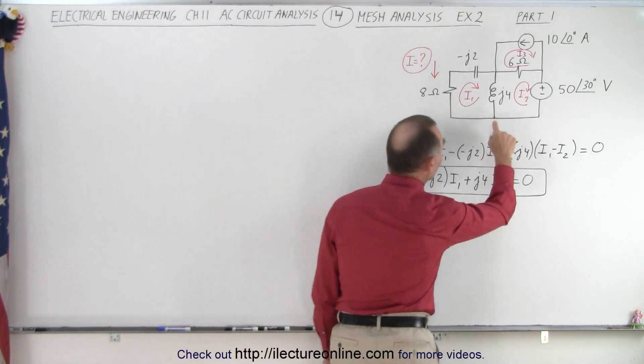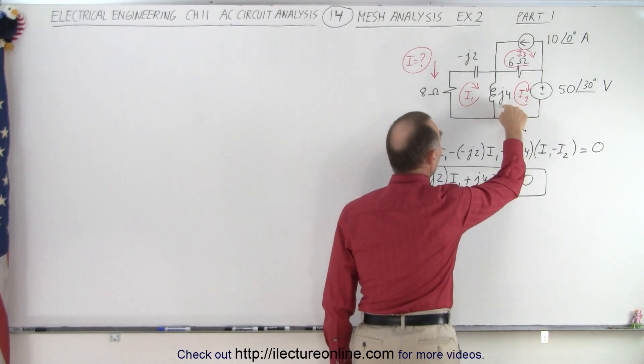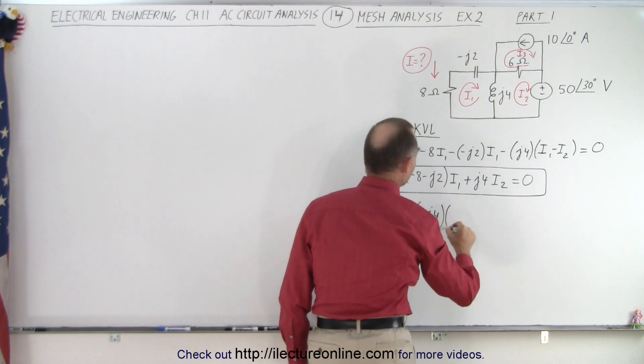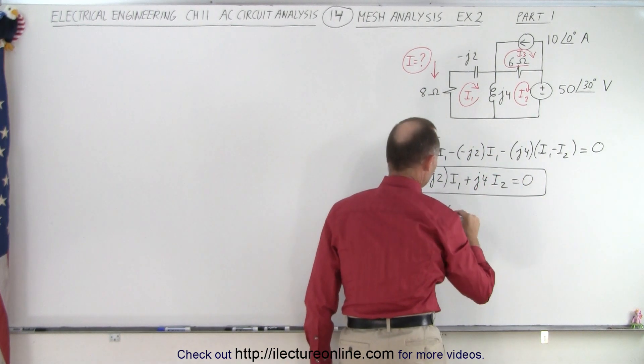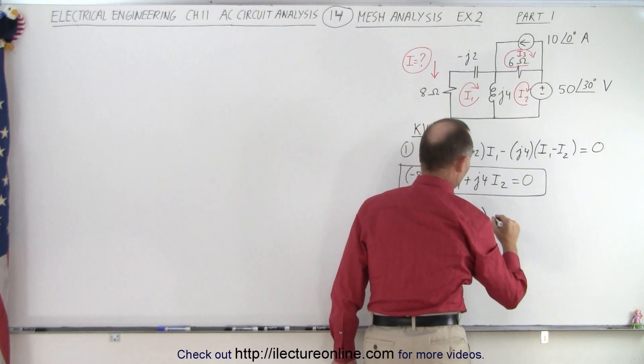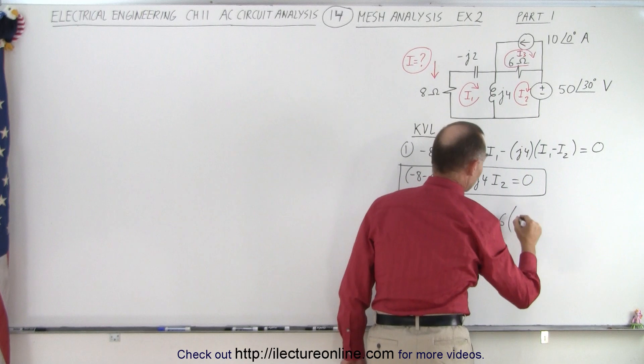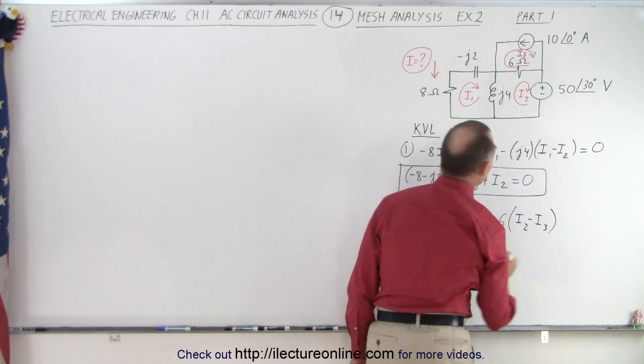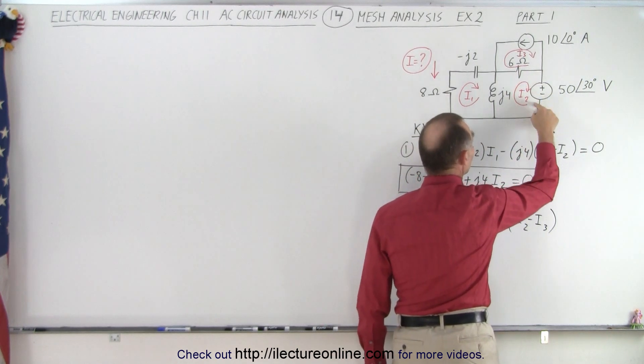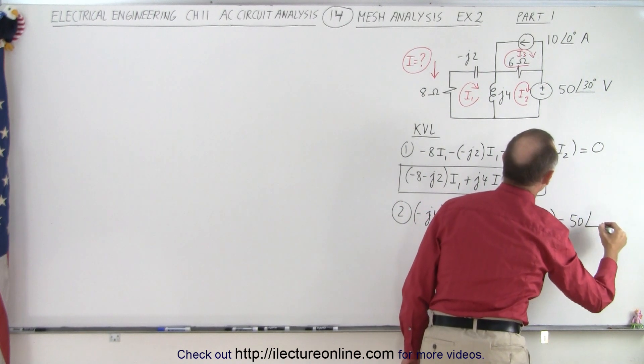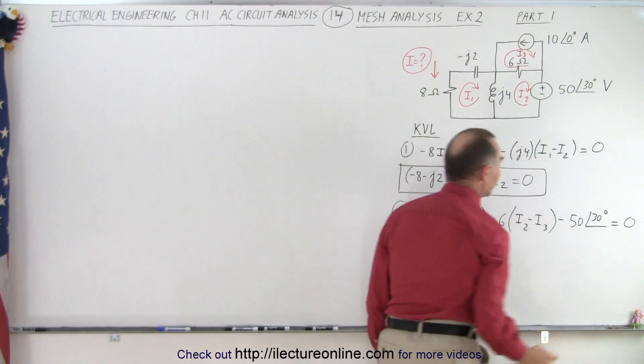Starting again, we'll start at this corner right here. We move all the way around. So we have J4, so we drop a minus J4, and that would be with the current I2 and against the current I1. Then we come up here, we go across the resistor, so it's minus 6 times, we go with the current I2, and looks like against the current I3 like this. And then we go across the voltage supply from positive to the negative, so it's minus 50 volts with a phase angle of 30 degrees, and all that adds up to zero.